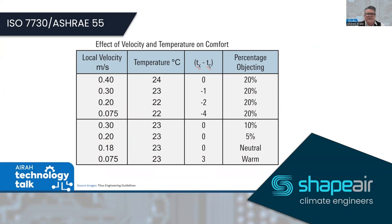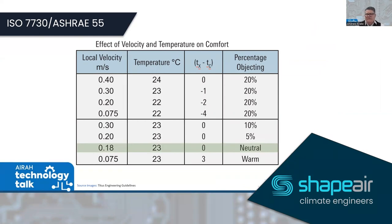With a velocity of 0.4 m/s within the space and a temperature of 24°C, 20% of people would be dissatisfied — purely from air velocity being too high. Reducing to 0.3 m/s at 23°C brings dissatisfaction to about 10%. At 0.18 m/s and on temperature, virtually everybody in the space would feel a neutral effect — no one would be feeling cool or warm.